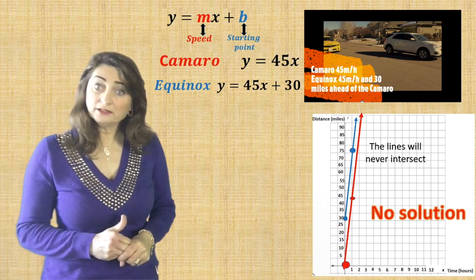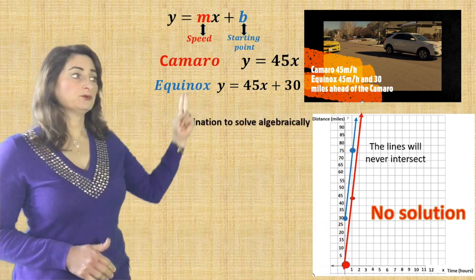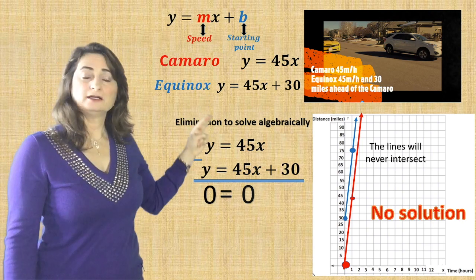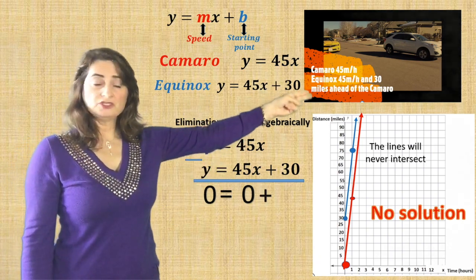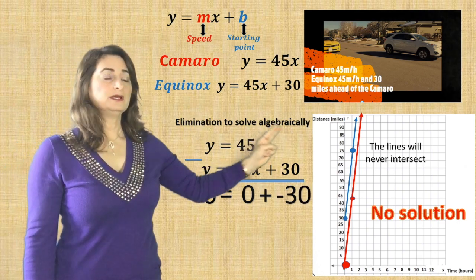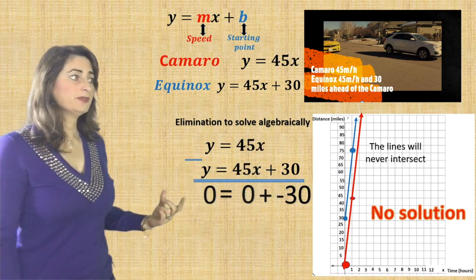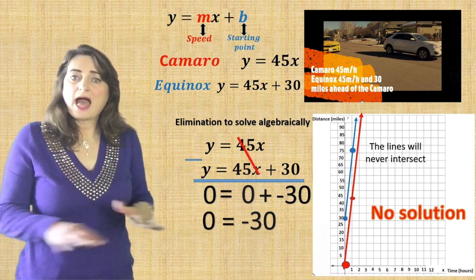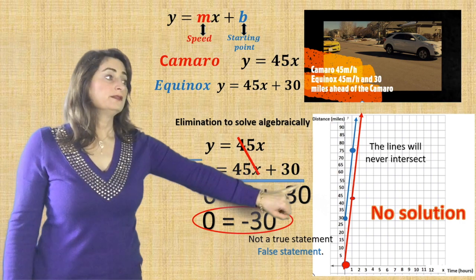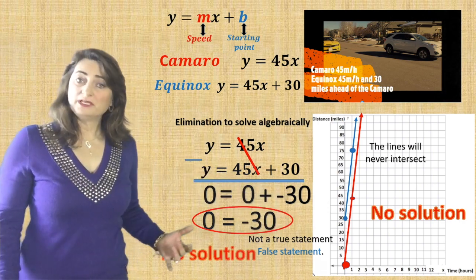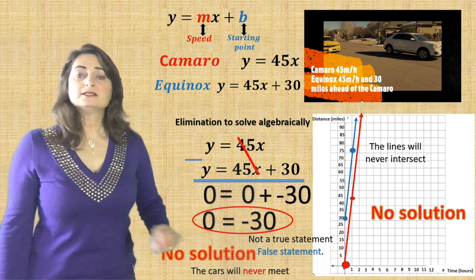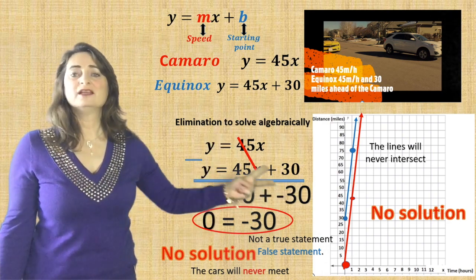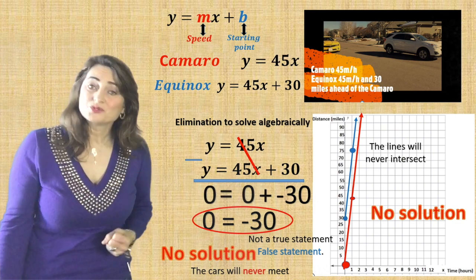Let's prove it algebraically using elimination. Write both equations and subtract them: y minus y is 0, and 45x minus 45x is 0, minus 30 is negative 30. Simplify: 0 equals negative 30. Can 0 equal negative 30? Absolutely not — that is not a true statement, which means no solution. There is no distance and no time at which both cars will meet. They started at different locations and go the same speed, so there's no way they can meet. That's what no solution means.